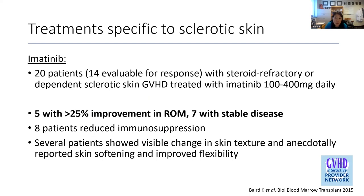Moving on to treatments specific to sclerotic skin GVHD: imatinib has been studied based on its inhibition of the PDGF receptor. A study at the NIH included 20 patients, 14 available for response, who had steroid-refractory or dependent sclerotic skin GVHD treated with imatinib up to 400 milligrams daily. Five patients had more than 25% improvement in range of motion, which was the primary endpoint, and seven had stable disease. Eight patients were able to reduce their immunosuppression, with several showing anecdotal skin softening and improved flexibility.